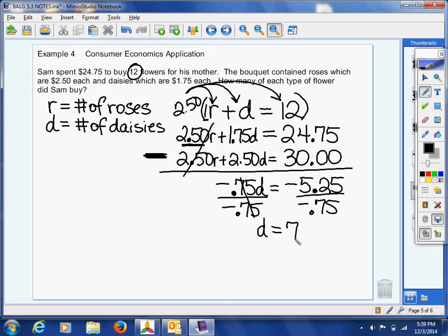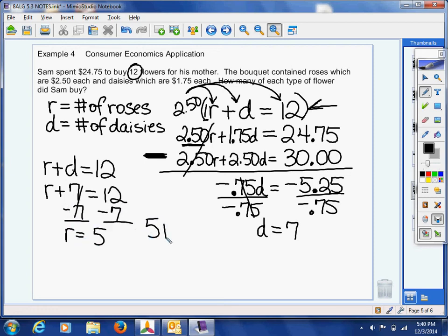Now, how do you find the roses? I'm going to tell you. I would take the easiest equation up there, that's r plus d equals 12, and you're going to put 7 where the d is. And you're asking yourself, what plus 7 is 12? You're right, that's 5. So what he did was he bought 5 roses and 7 daisies for his mom.